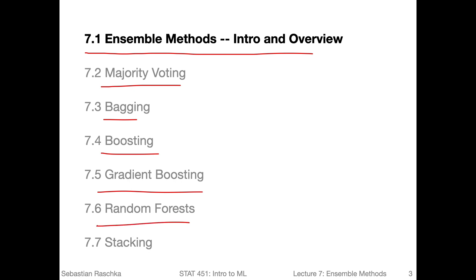Then we'll talk about random forests, which are probably something most of you have heard about — one of the biggest ensemble methods being used. What's really nice about random forests is that they usually work very well out of the box. You just choose a large number of trees, run the algorithm on a dataset, and almost always get pretty good performance without any hyperparameter tuning. This makes them very easy to apply, especially for people who are not experts in machine learning but want to make predictions.